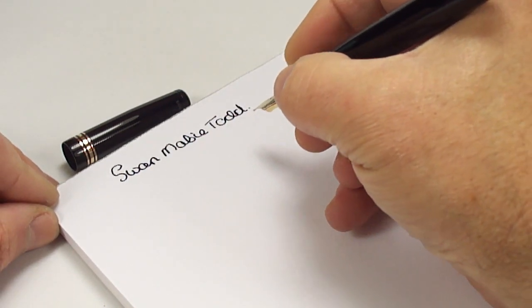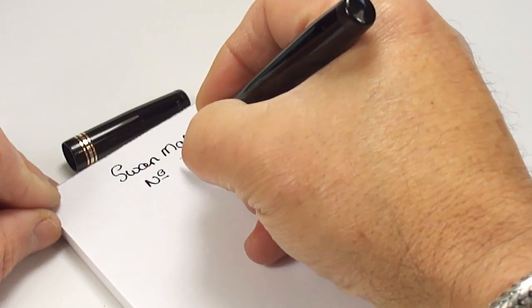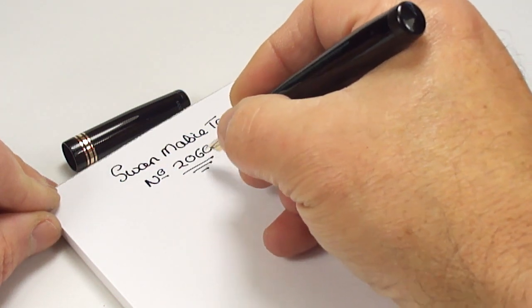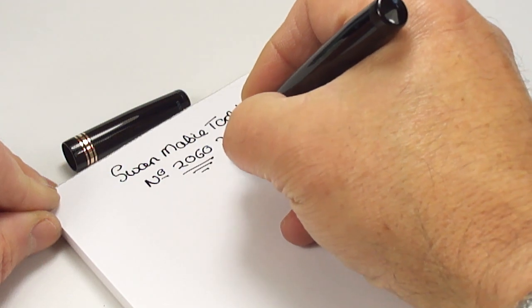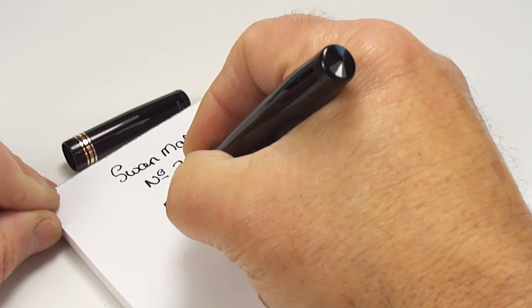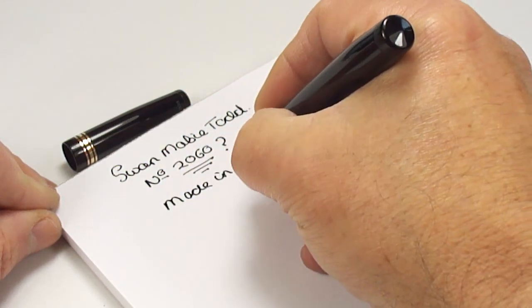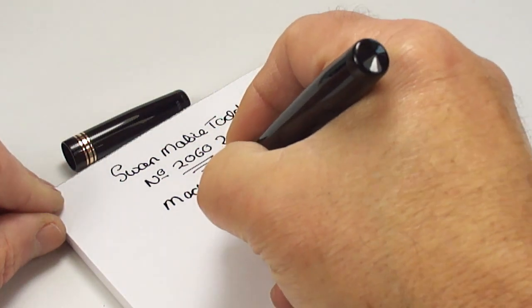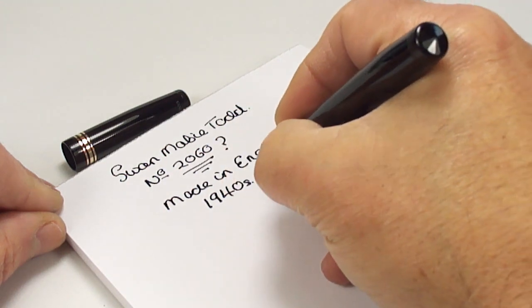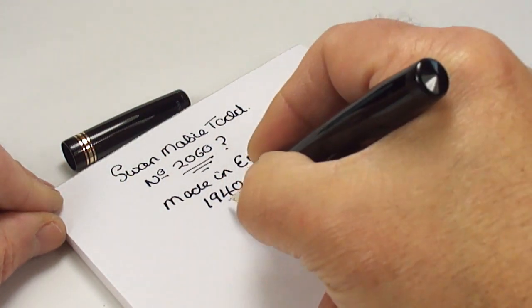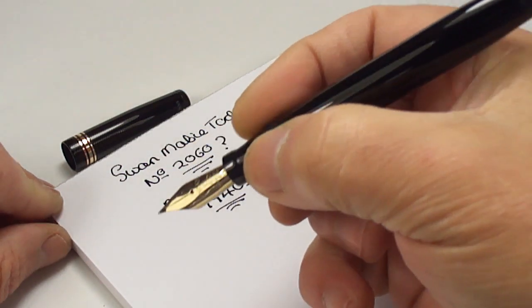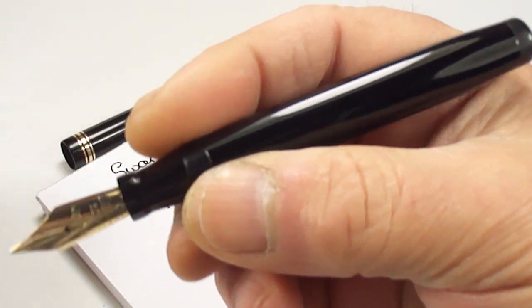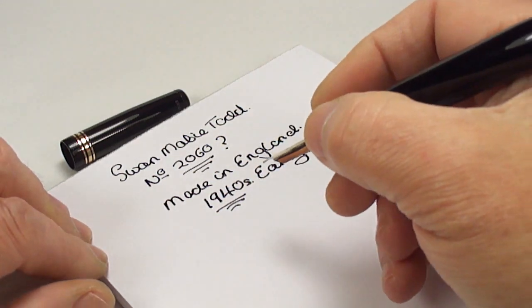So what we have is a Swan Mabie Todd. I'm saying it's the Number 2060, but that's questionable. Made in England. And as we said earlier, early 1940s, very early indeed, because there's another pen that I'm going to show you on the next video which I would say is the upgraded version of this particular pen.